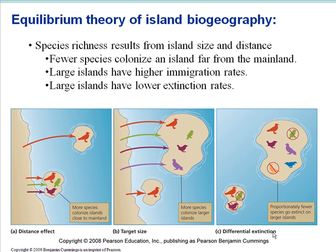Island biogeography theory is a key component of conservation biology. Much of modern conservation biology is based on the equilibrium theory of island biogeography. Protecting habitat and species requires thinking and working at the landscape level. The equilibrium theory explains how species come to be distributed among oceanic islands, but it also applies to habitat islands — patches of one habitat type isolated within a sea of others. The theory predicts island species richness based on island size and distance from the mainland, so larger islands closer to the mainland will have greater species richness, while smaller, more distant islands will have the least.